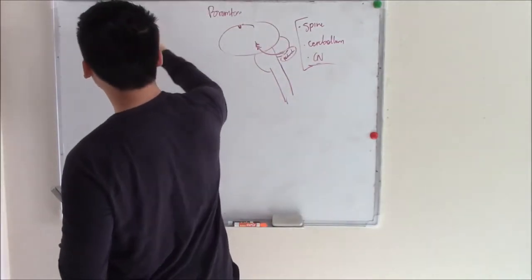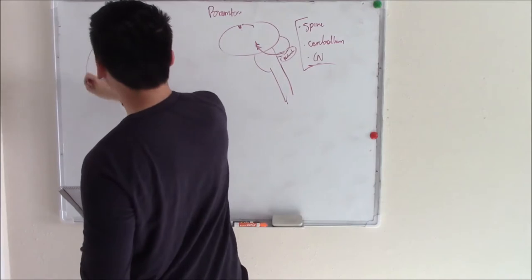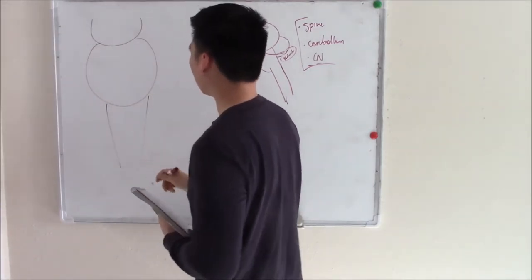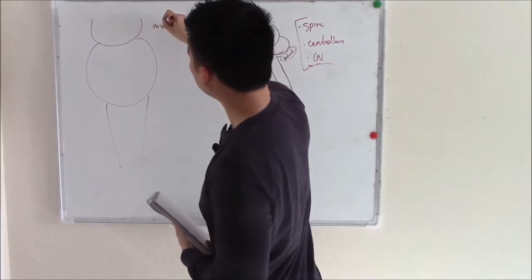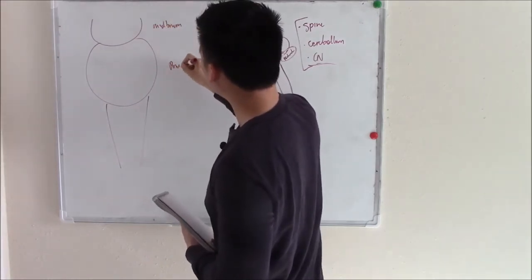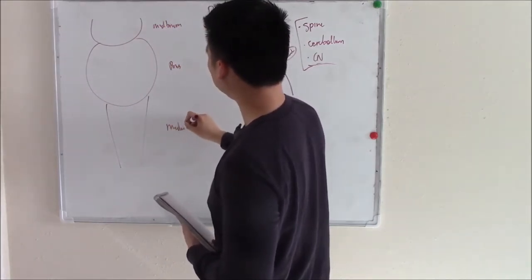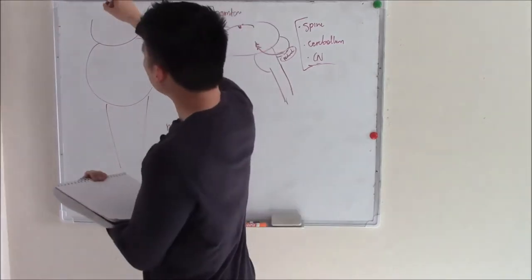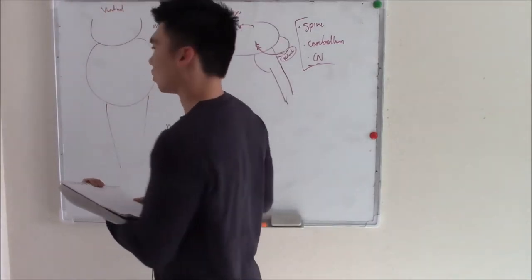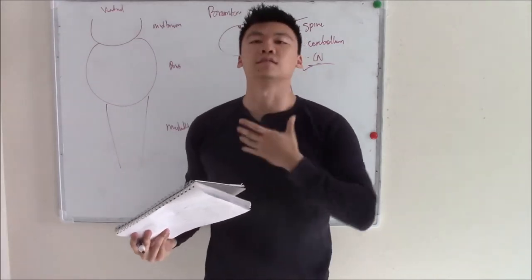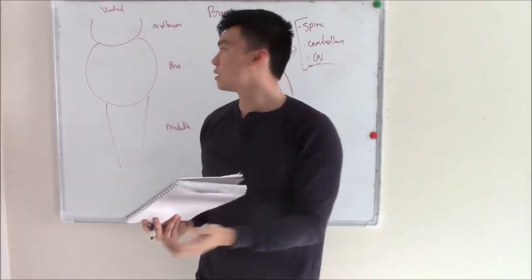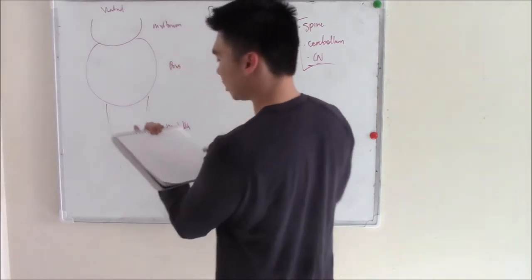So let's finally talk about the anatomy of the brainstem — quick and dirty. We'll say this is your midbrain, this is your pons, and this is your medulla. This is a ventral view of your brainstem — we're looking at it face on. Midbrain, pons, medulla.